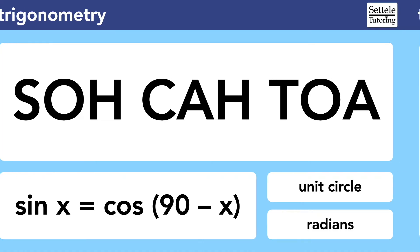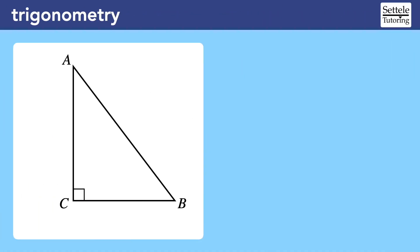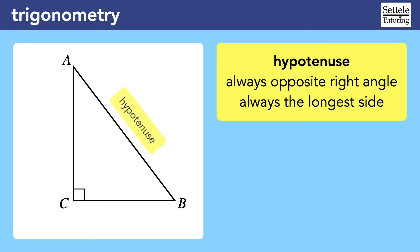Let's start with some important definitions. Remember that trigonometry is based around right triangles. The hypotenuse of a right triangle is the side opposite the right angle, and it's always the longest side of the triangle.